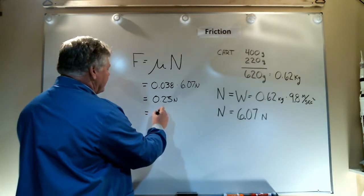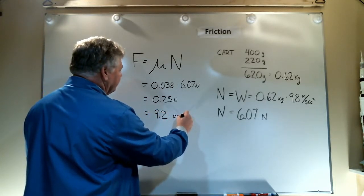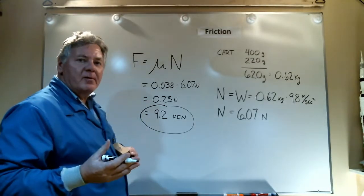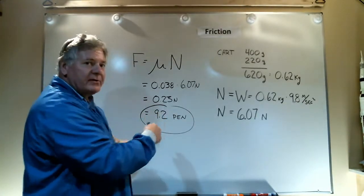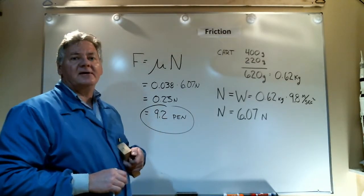I want to convert that to pennies for my experiment. So I multiply 0.23 by 40 pennies per newton, and that gives me approximately 9.2 pennies. So I can go over and repeat the experiment one more time, putting in 9 or 10 pennies to see if I can get this cart to start moving.